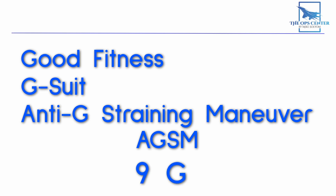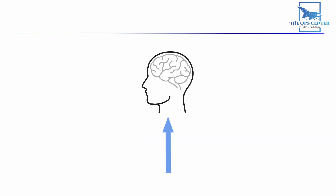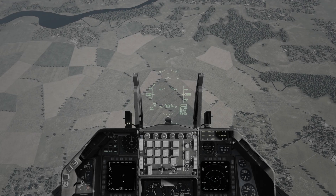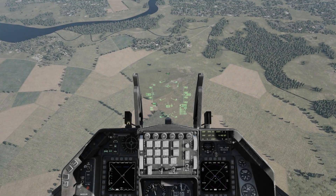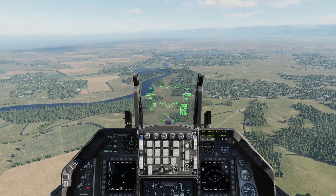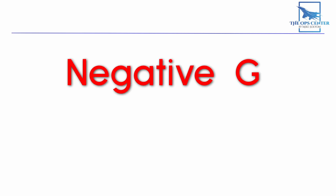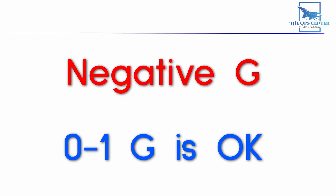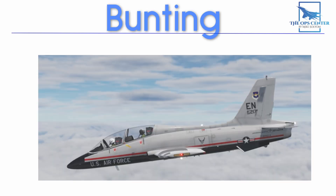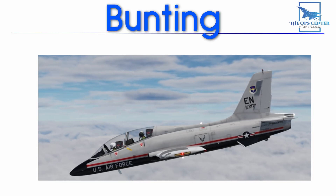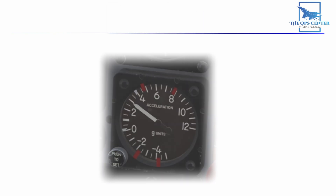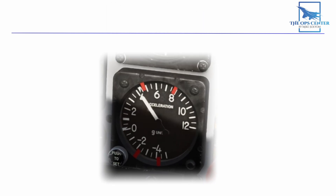Pulling too many positive G's is bad, but so is pulling negative G's. With acceleration in the opposite direction, blood flows toward the head, increasing pressure there, which can cause small blood vessels in the eyes and brain to burst. DCS models this as a blackout that happens when you pull negative G's. Importantly, this only applies to negative G — not to the spectrum between 0 and 1G. It's okay to go below 1G, so a gentle drop of the nose is permissible; this is called bunting the aircraft. But avoid going below 0 into the negatives.